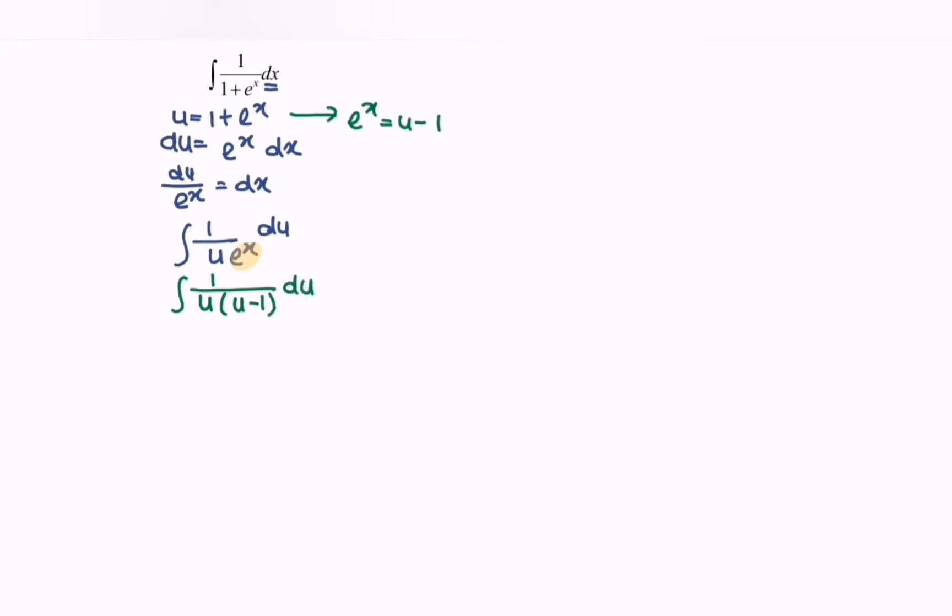So next, what we have to do is use partial fractions. So 1 over u bracket u minus 1 equals A over u plus B over u minus 1.